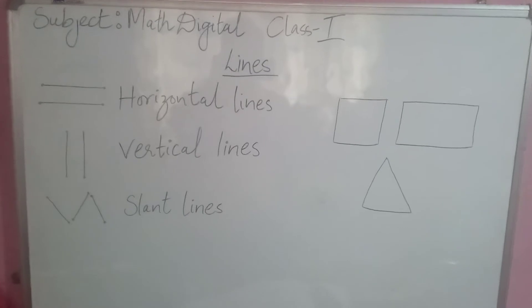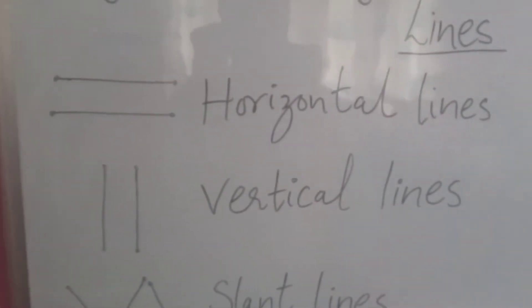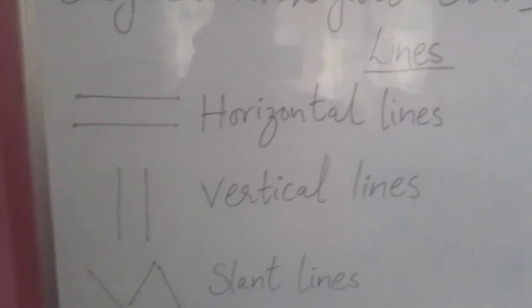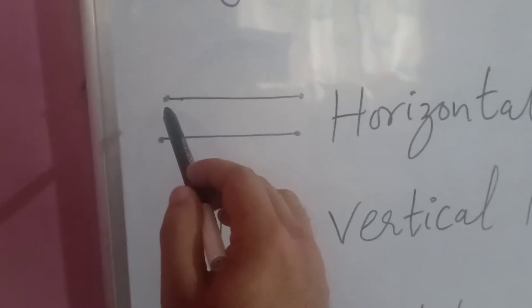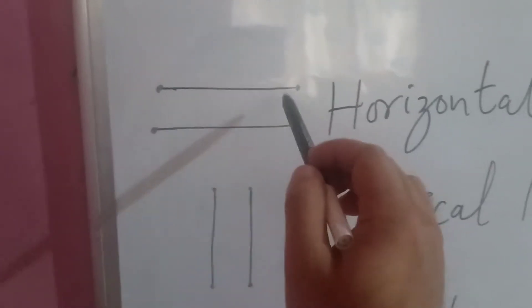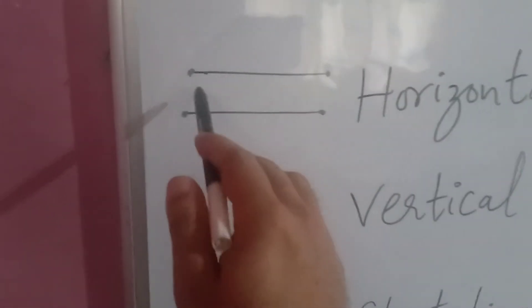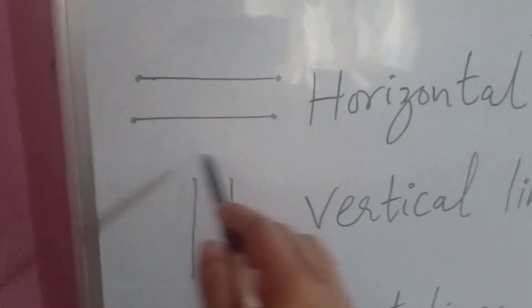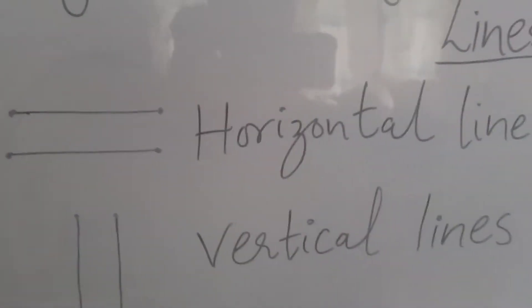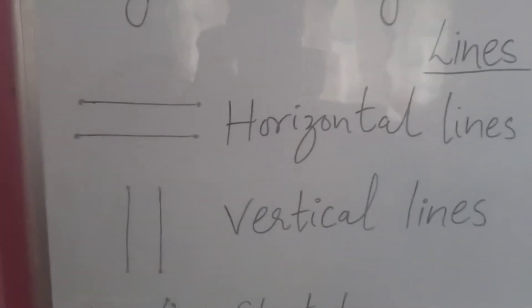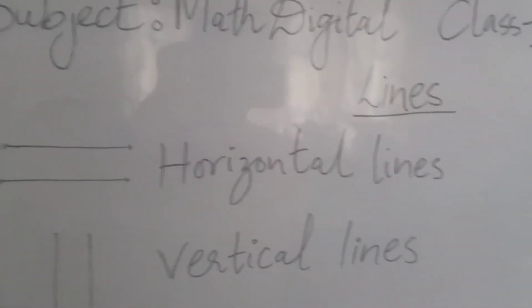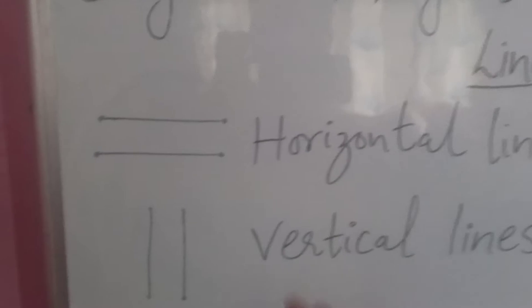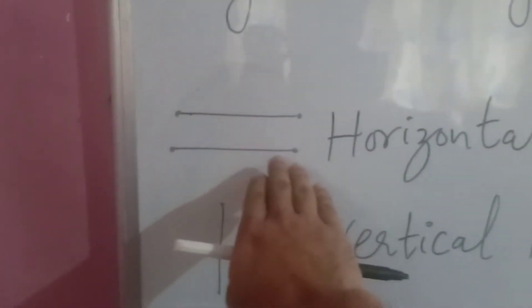The first type we have is the horizontal line. If you see a line going from left to right or right to left, these lines are called horizontal lines. If you look at your exercise book, you can find these horizontal lines there.